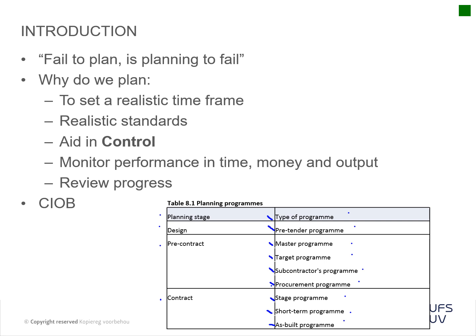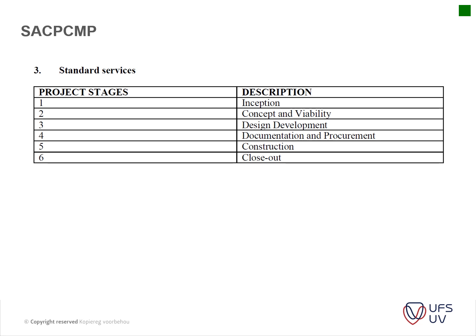As things change, your program is constantly being updated. For your task you're basically looking at these two programs, which incorporates your construction period — but that's usually only a one-liner to show the contract period will be three or six months. You don't have detail such as when foundations are laid or when the roof goes up. Also highlighted here are the different stages — the extract shows the SACPCMP, which is the Council for Construction Project Managers, and it's exactly the same as the QS and architects' stages.